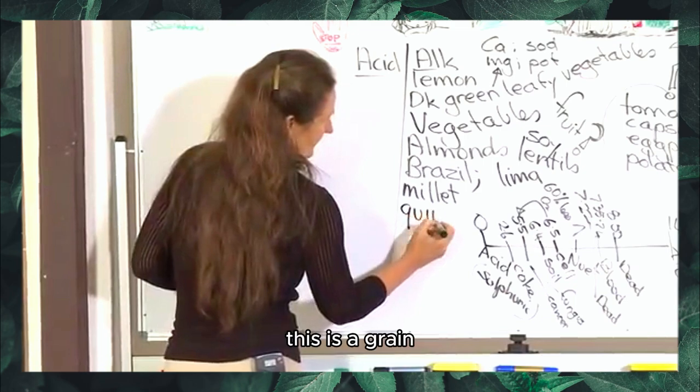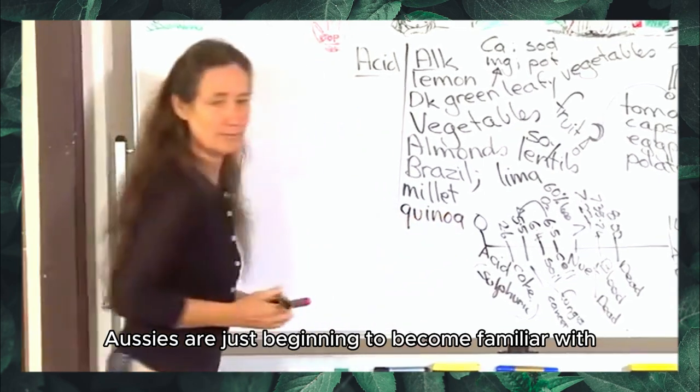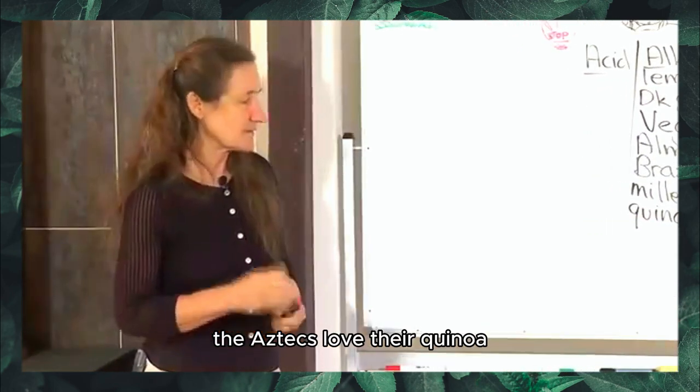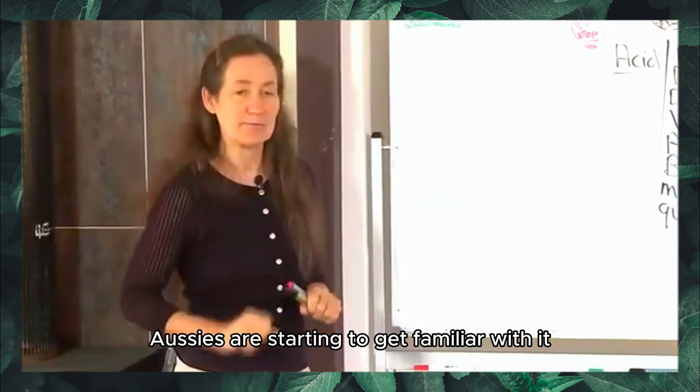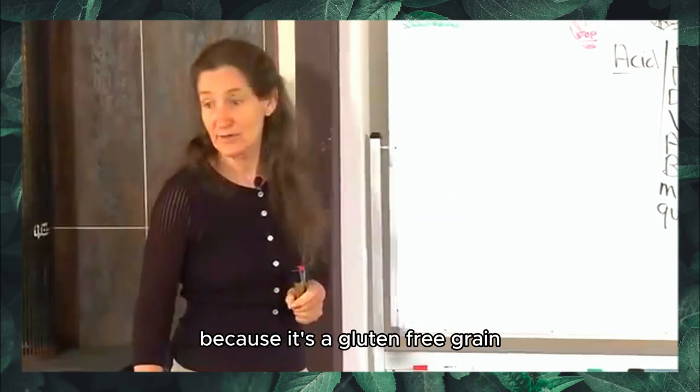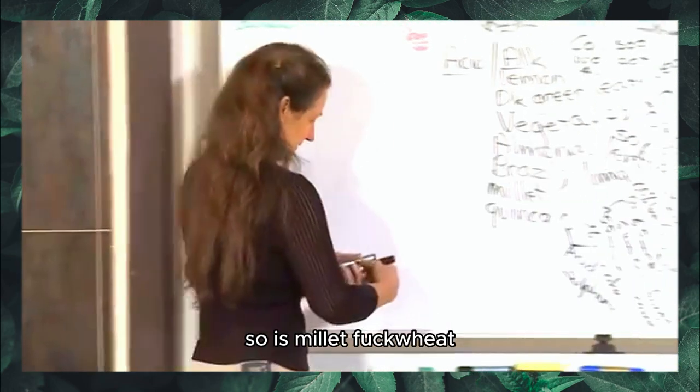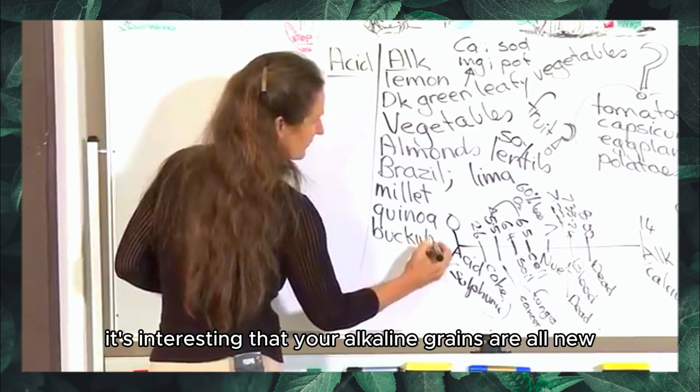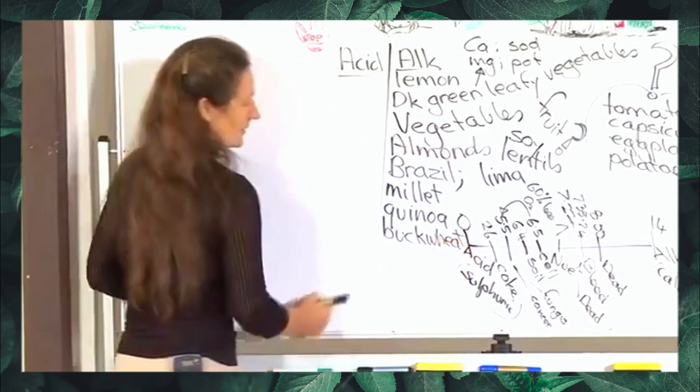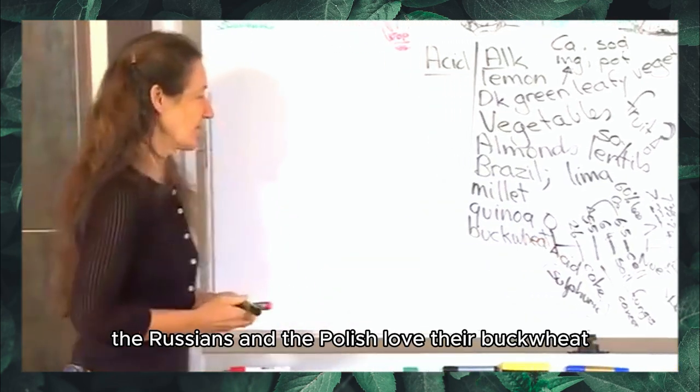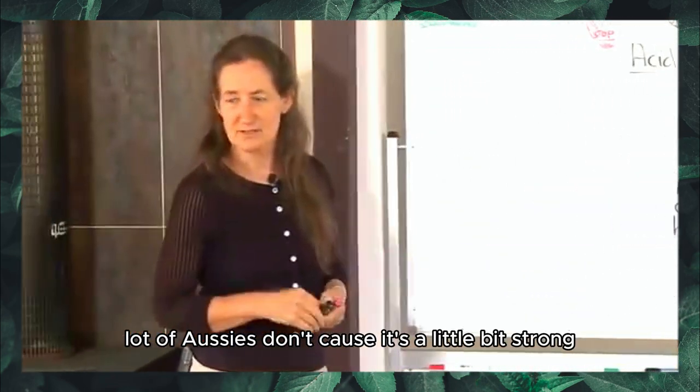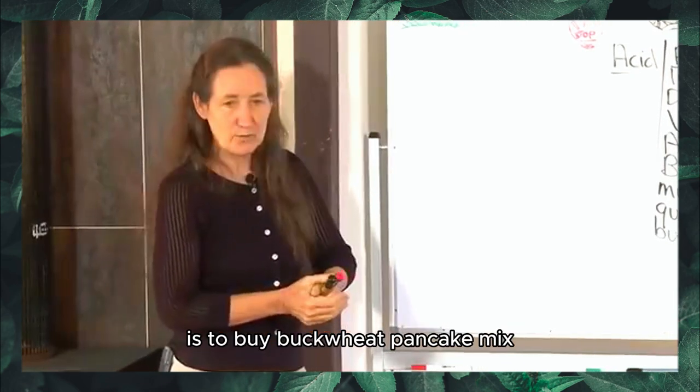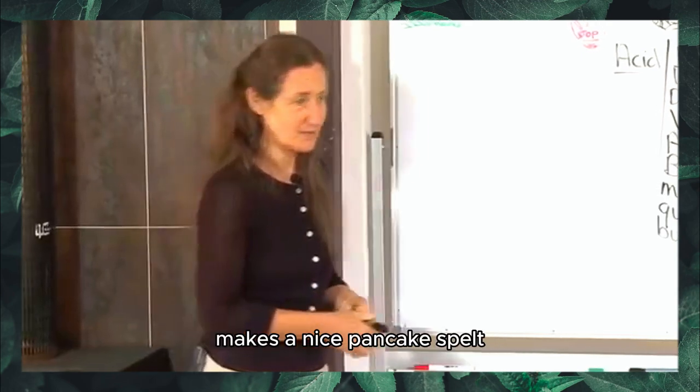Quinoa. This is a grain Aussies are just beginning to become familiar with. It's spelled quinoa, but it's pronounced quinoa. The Aztecs love their quinoa. Aussies are starting to get familiar with it because it's a gluten-free grain. So is millet. Buckwheat. It's interesting that your alkaline grains are all your gluten-free grains. The Russians and the Polish love their buckwheat. A nice way to get used to buckwheat is to buy buckwheat pancake mix from your health food shop.